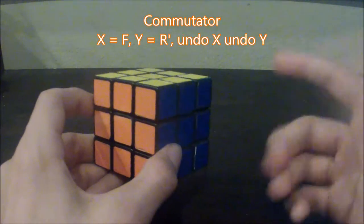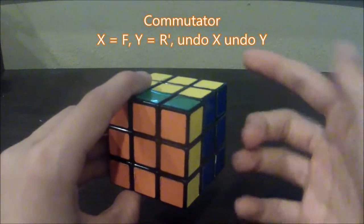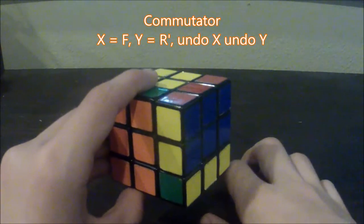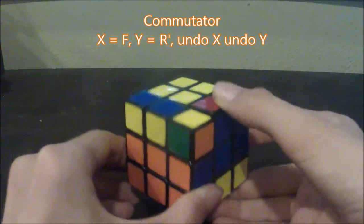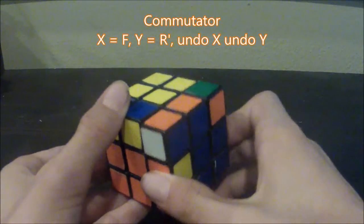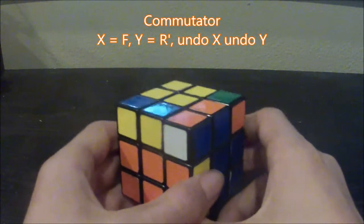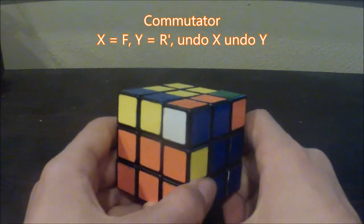Now let's do that. So, X is this, Y is right counterclockwise, then undo X, then undo Y, and now we can see that a lot has happened. But let's take a closer look.